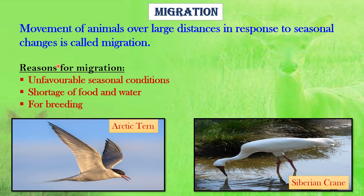The reasons for migration are unfavorable seasonal conditions, shortage of food and water, and breeding. Due to unfavorable seasonal conditions, animals face shortage of food and water and the weather is not suitable for breeding, so they migrate from one place to another. The Arctic Tern is famous for its migration — it flies from the Arctic region to the Antarctic and back again each year.